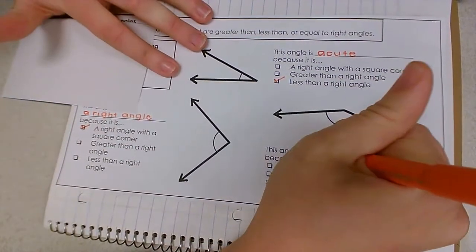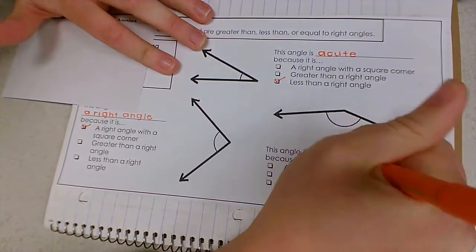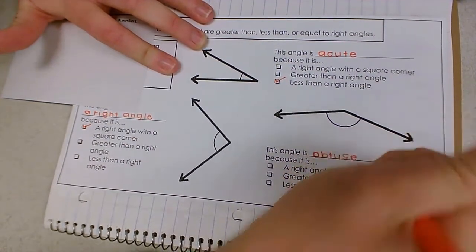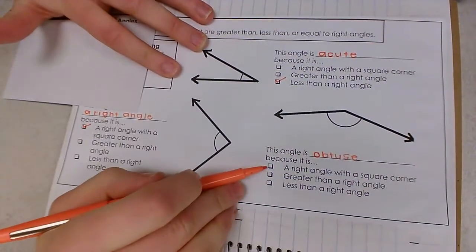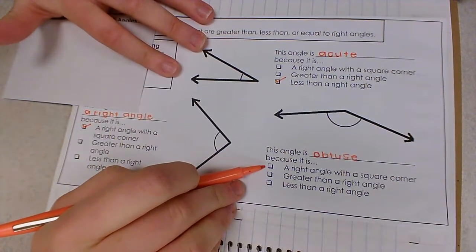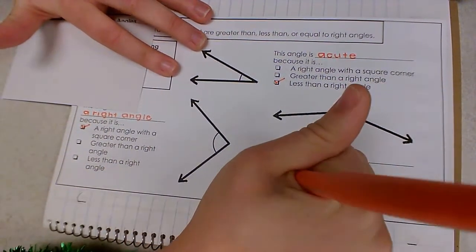This angle is obtuse. I know this because it's a right angle with a square corner. Nope. It's much larger than that. Greater than a right angle. Yep. That's us.